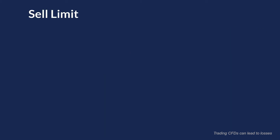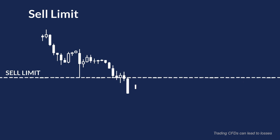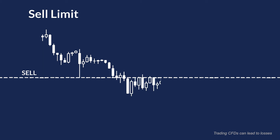A Sell Limit is the predefined price set by a trader when he wishes to sell the asset in the future. The price for the Sell Limit is always higher than the current market price. This order type is used when the trader hopes the price of his asset will fall after a pullback.